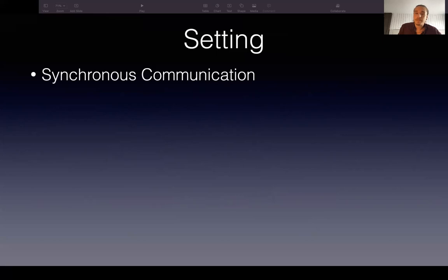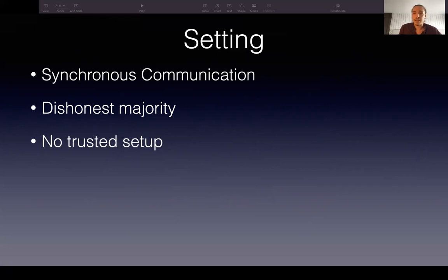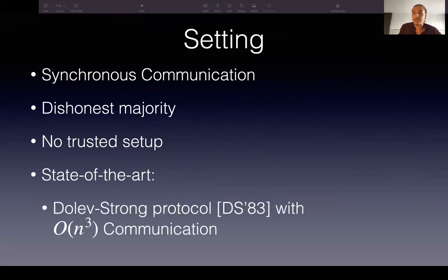In the setting that we first explore, we assume synchronous communication, dishonest majority, in which the adversary can corrupt up to as many parties as they like, and no trusted setup. This is a setting that appears sometimes in blockchains. In this setting, the state of the art is a protocol by Dolev-Strong in 1983. This protocol achieves cubic communication in terms of the number of participants. However, cubic communication can be bad for many applications. So this is the motivation for our work where we wanted to improve the communication of such protocols.